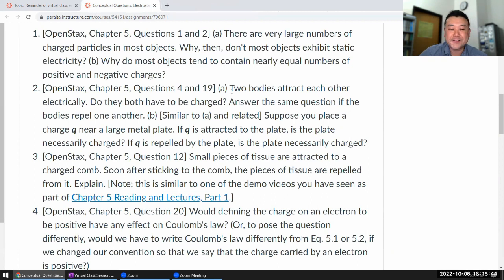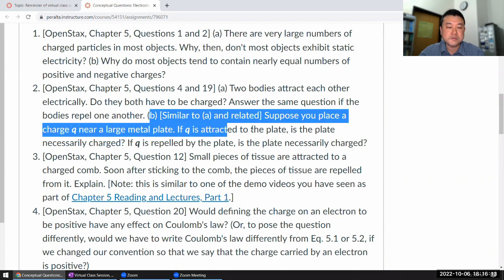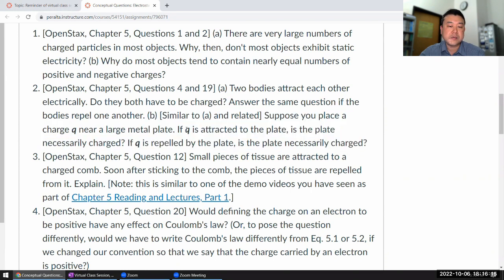Okay. Two bodies attract each other electrically. Do they both have to be charged? No. The answer is no. And I will leave it up to you to explain how two bodies could attract each other if they are not both charged. And if they repel each other, then yes, they have to be both charged. And you should explain. Suppose you place a charge in your metal plate. It's an attractive plate. So B is related to A.